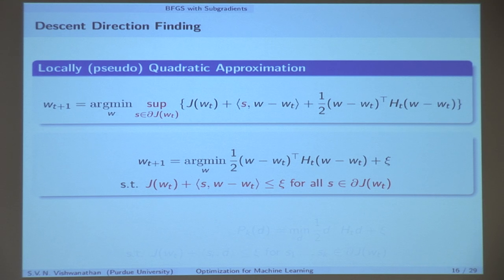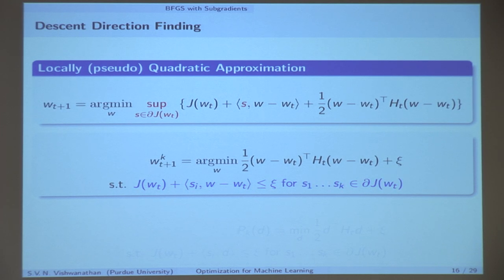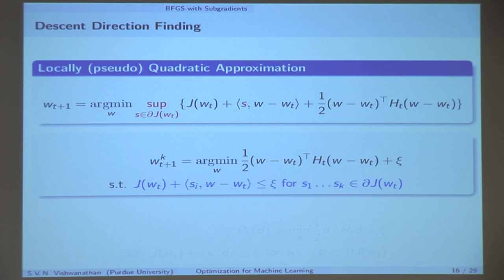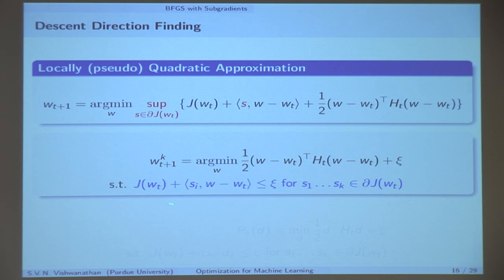The way I am going to deal with this — usual computer science trick: if you can't solve it, cheat. I am going to carefully select a set of subgradients. I am not going to sample randomly; I am going to carefully sample a set of K subgradients such that if this constraint is satisfied for K of them, then very likely I will find a direction of descent. This seems magical — I still haven't told you how to sample.